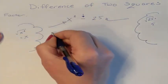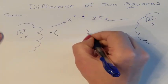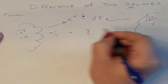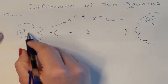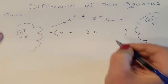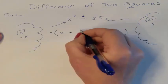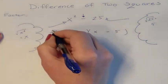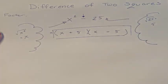So if you see a difference of two squares, you can really quickly factor it. How you factor it is you have two parentheses — one parenthesis has a plus, the other has a minus. The first term is the first term in both parentheses. The second term is the second term in both parentheses. And this is how you factor the difference of two squares.